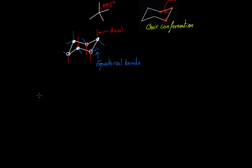It's important to know that cyclohexanes undergo a conformational change called ring flipping. As a result of a ring flip, the up carbons become down carbons and the axial bonds become equatorial bonds.